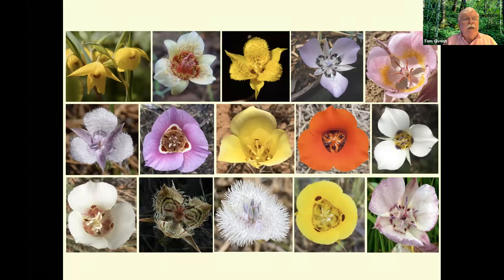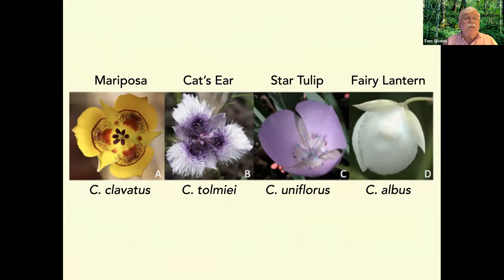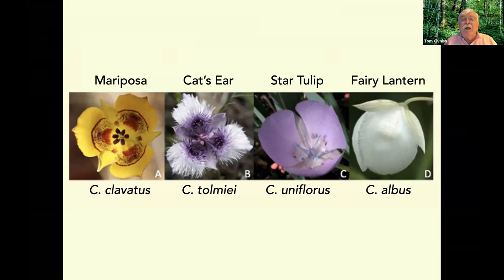Most species are endemic to or restricted to small geographic areas. The principal floral syndromes include: mariposas, marked by large, brightly colored, tulip-like blossoms with erect petals bearing conspicuous spots; cat's ears, with smaller, spreading petals densely covered with hairs; star tulips, with spreading glabrous petals; and fairy lanterns, with nodding bell-shaped closed or nearly closed flowers. Different species inhabit deserts, grasslands, chaparral, mountain meadows, vernal pools, alkali springs, montane woodlands, and temperate and subtropical forests.